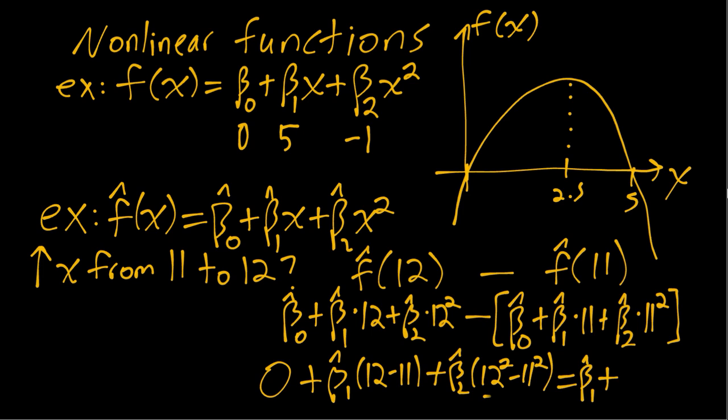This other part is 144 minus 121, which is 23. Then we can just plug in whatever beta hats we get estimated from our data to get our estimated change in y associated with an increase in x from 11 to 12.